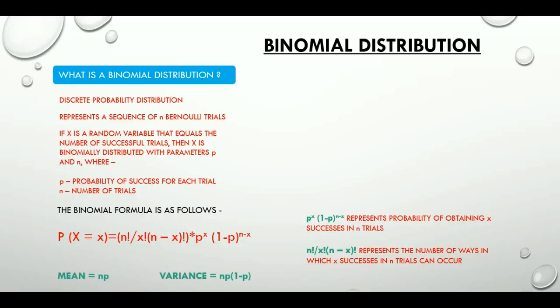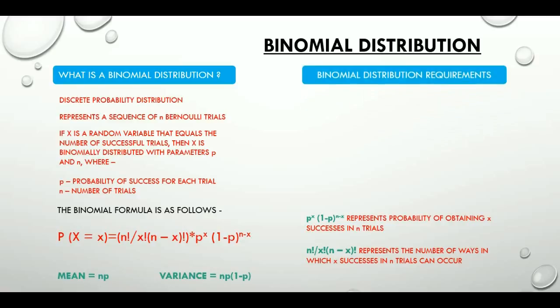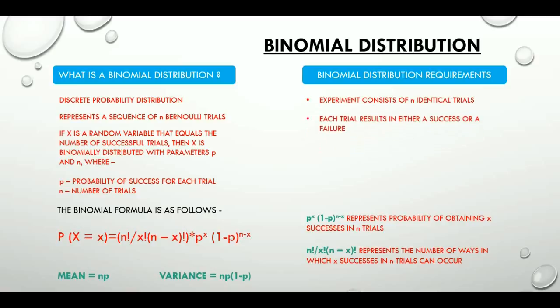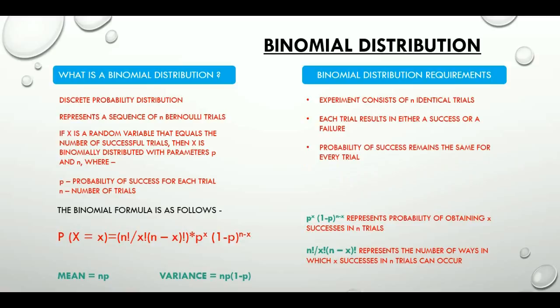Let's look at the conditions for a distribution to be called binomial. Firstly, the experiment should have some number of identical trials. Each trial should result in a success or a failure, going by the Bernoulli trial we just talked about. For every trial, the probability of success remains the same. And finally, the trials are independent. All these conditions should be met for a binomial distribution.